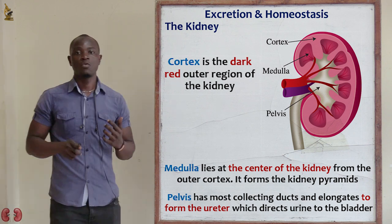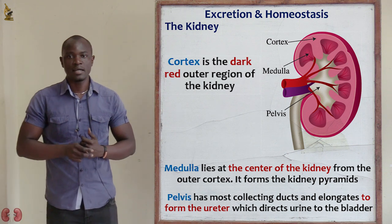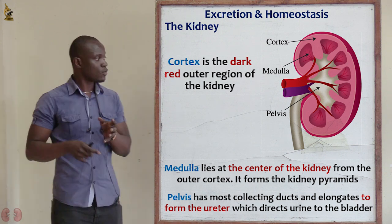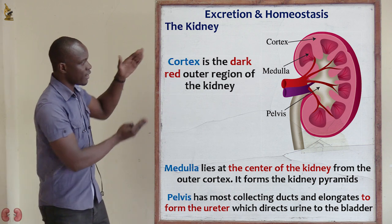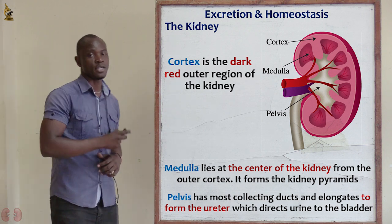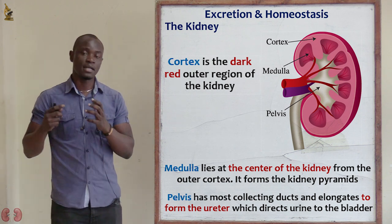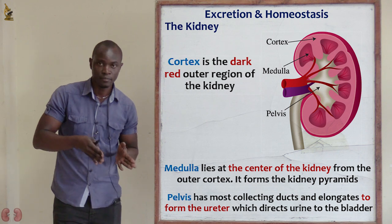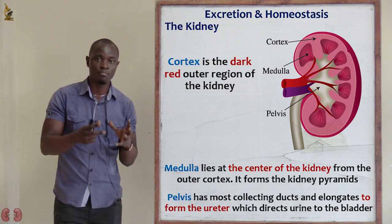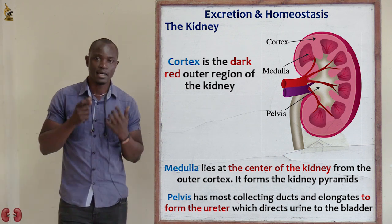Now looking at the pelvis, we see that it is white in color and it mainly forms the ureter. As you can see, that is the pelvis, which forms the ureter. The ureter is connected to the urinary bladder. The urinary bladder temporarily stores urine before it is excreted through the urethra and into the surrounding.